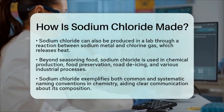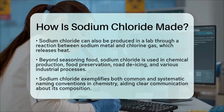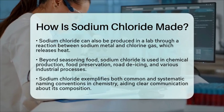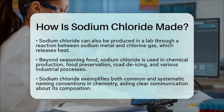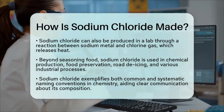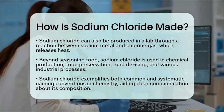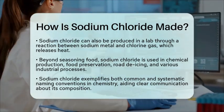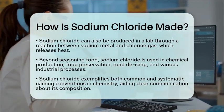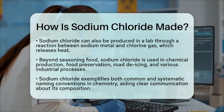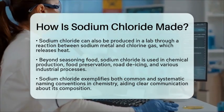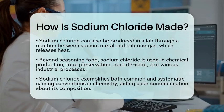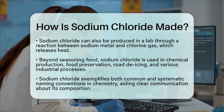In the realm of chemical nomenclature, sodium chloride is an excellent example of both common and systematic naming. The common name, table salt, is widely recognized, while the systematic name follows the International Union of Pure and Applied Chemistry rules. In this case, the cation sodium is named first, followed by the anion chloride. This systematic approach helps clearly identify the chemical composition of compounds, making it easier for students and professionals alike to communicate about them.